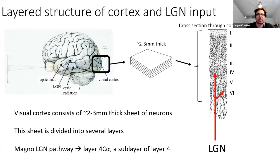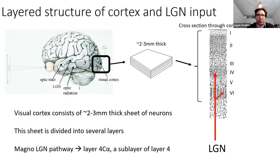The magnocellular LGN pathway that we're interested in projects into one layer in particular — a sub-layer of layer 4 called 4C alpha — and also makes some projections into layer 6. Of interest to us is layer 4, in particular 4C alpha. This is the primary entry point of LGN into cortex, and this will be the subject of our modeling efforts.